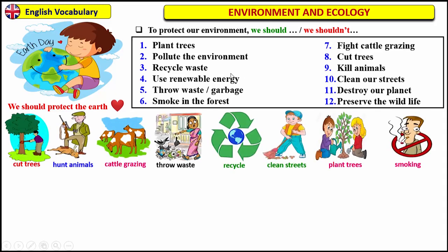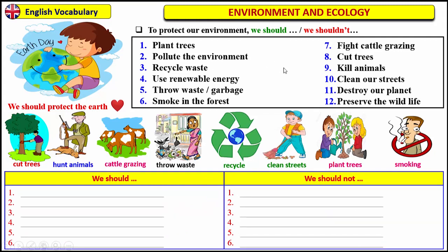Here are some pictures to help you understand. Your exercise is to classify these things in the chart: we should and we should not. Write all the things we should do to protect our planet, and all the things we should not do. For example, we should plant trees. Should we pollute the environment? No, we should not pollute the environment. Pause the video and do the rest of the exercise, then watch the key answers.